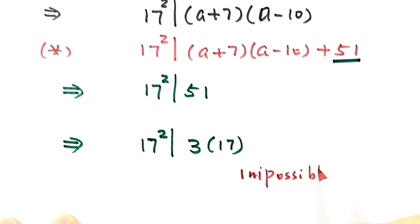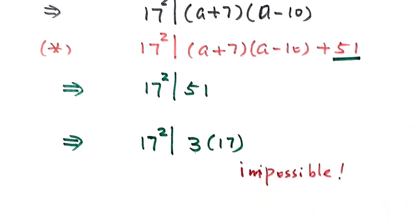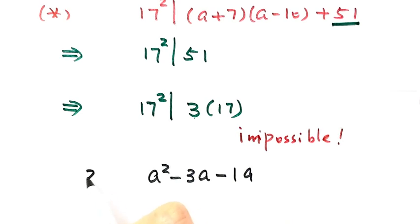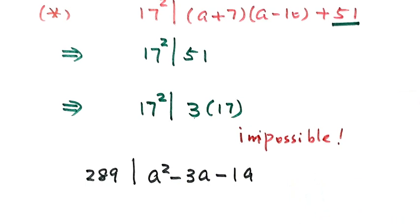We have reached an impossible situation — a contradiction. This means our assumption that a squared minus 3a minus 19 is divisible by 289 leads to a contradiction. Therefore, this expression is not divisible by 289, and we have proved the result. Thanks for watching.